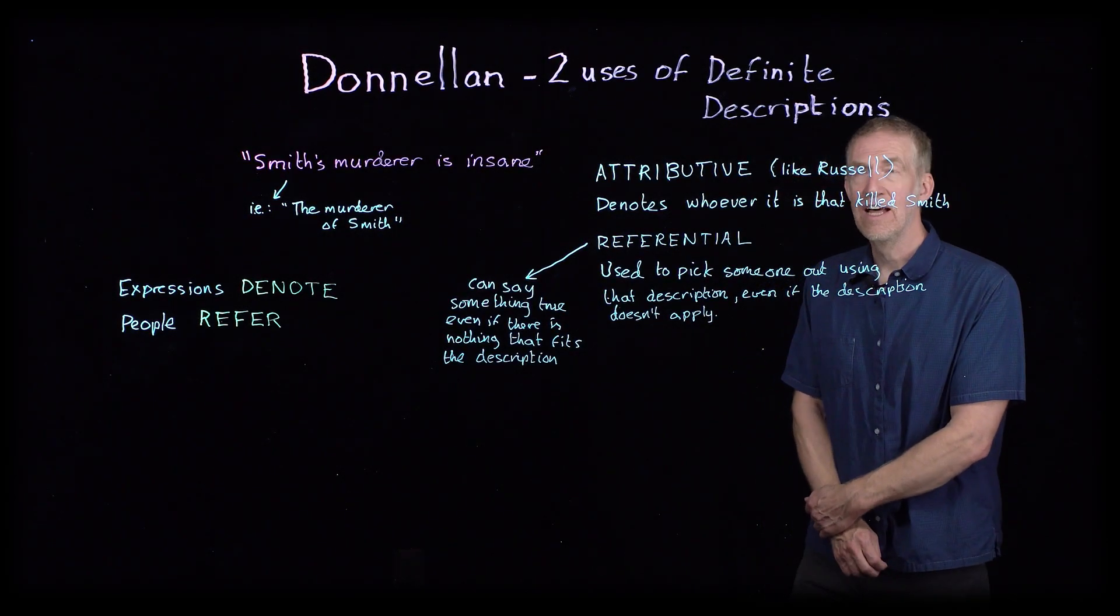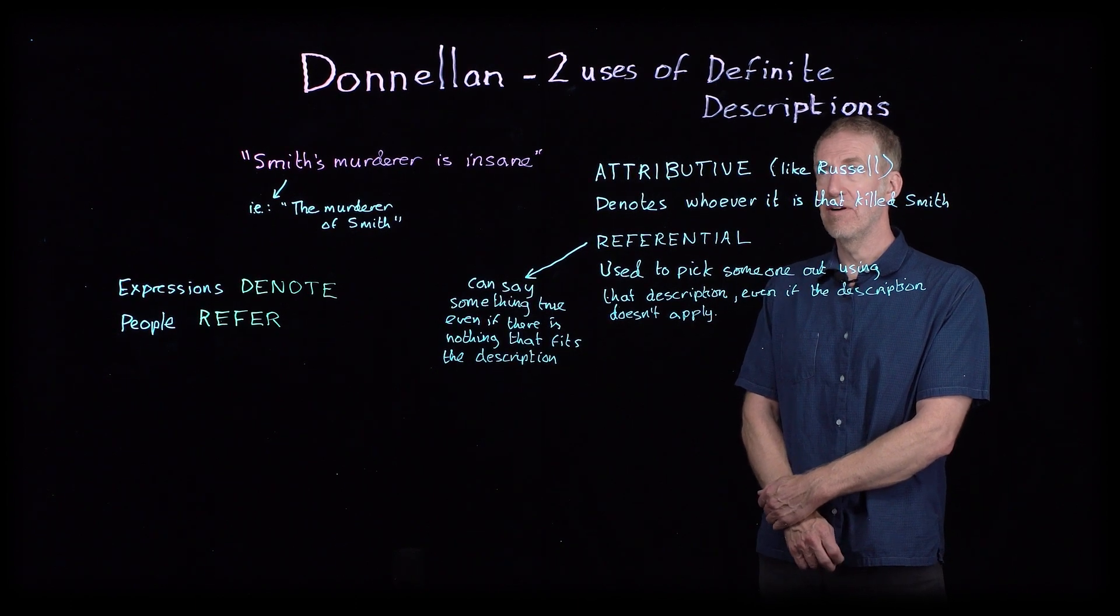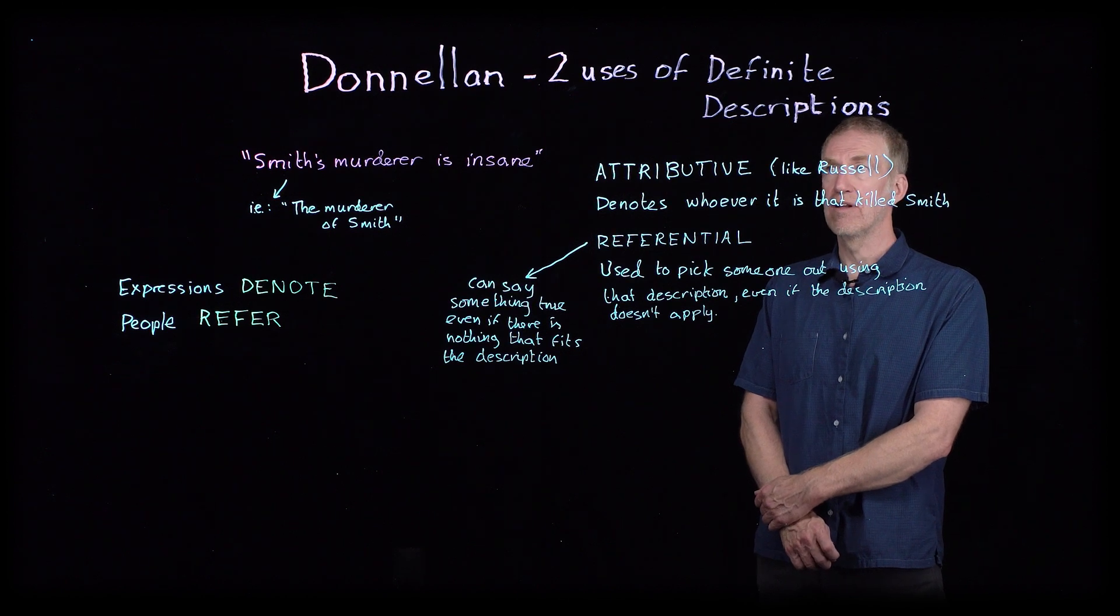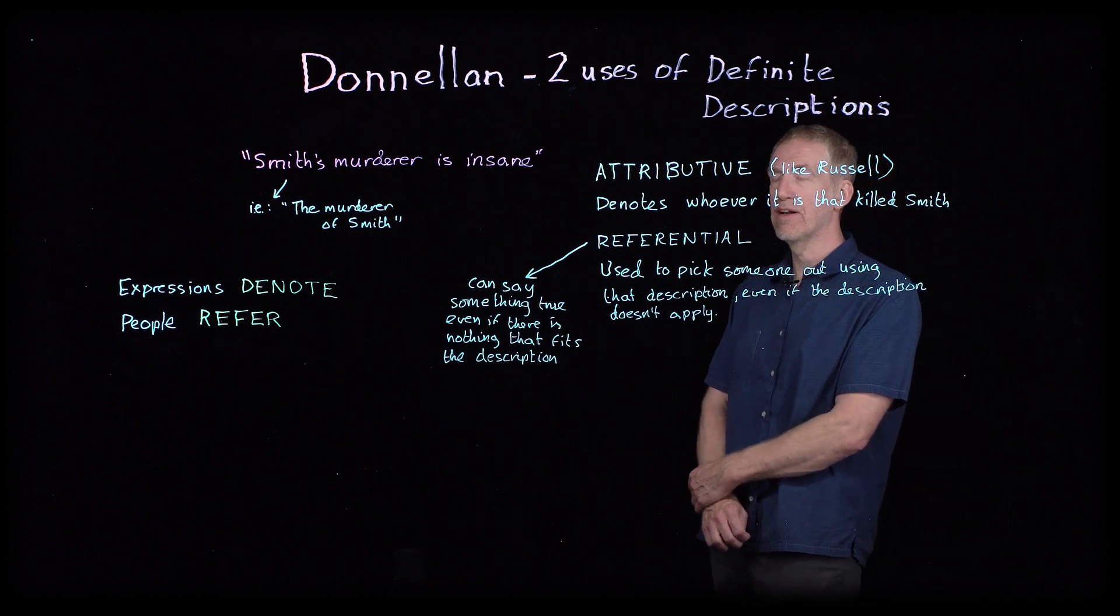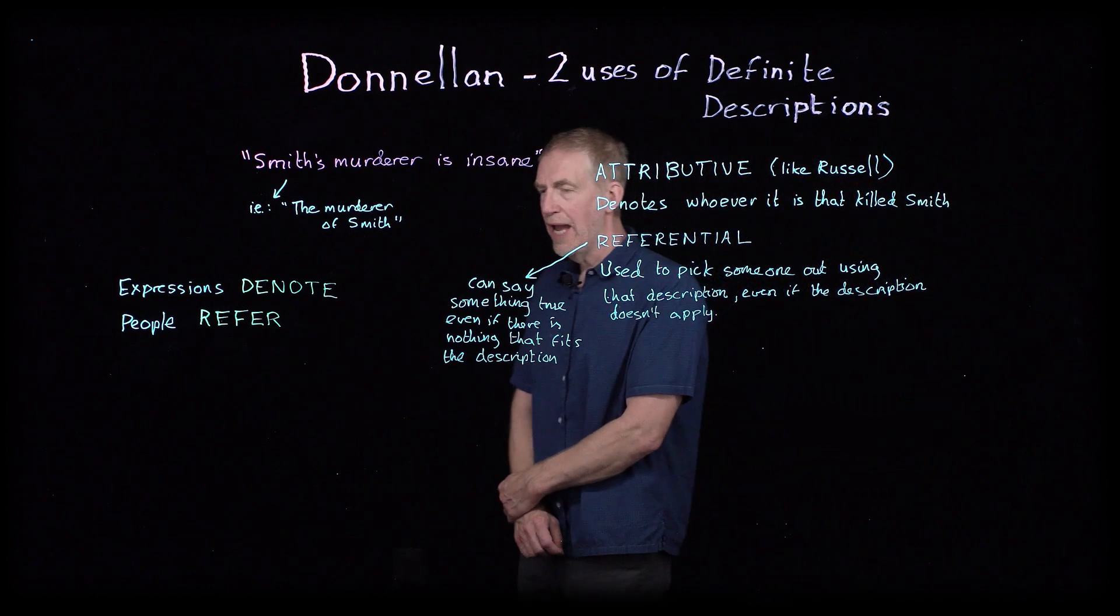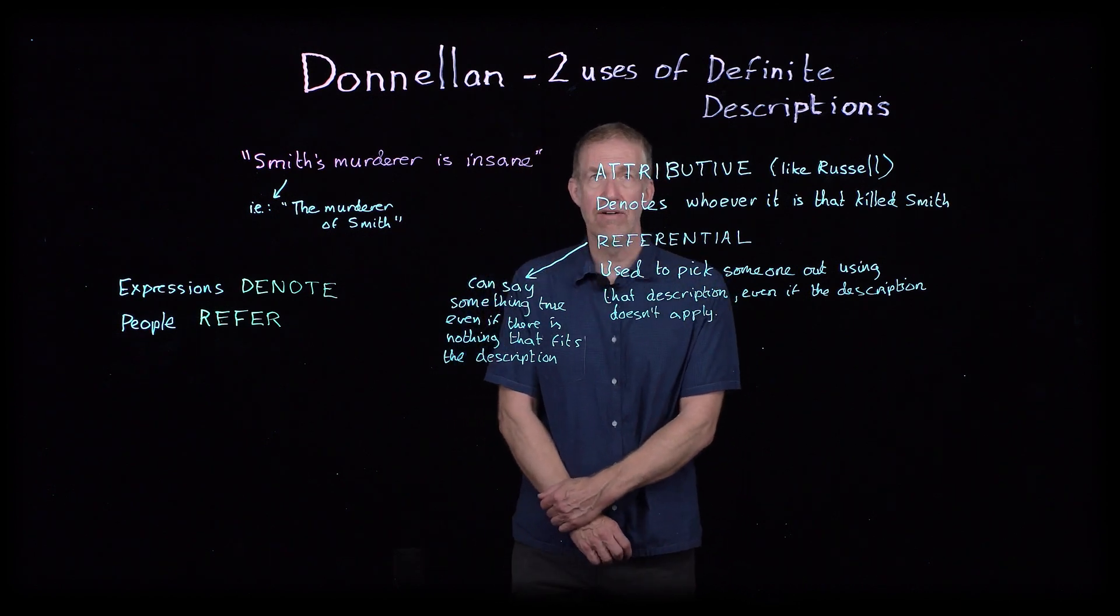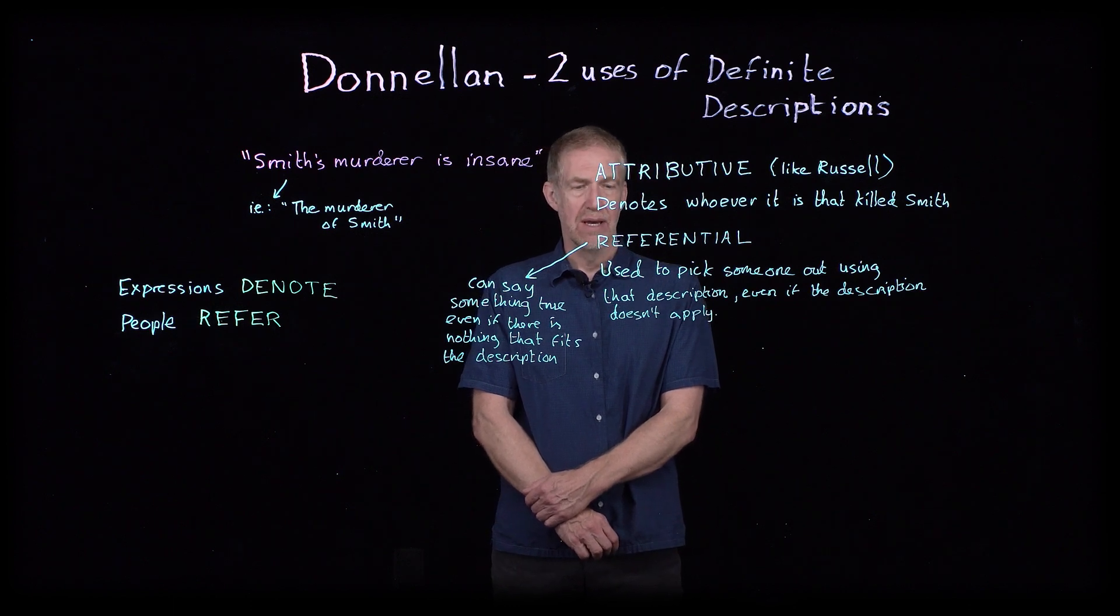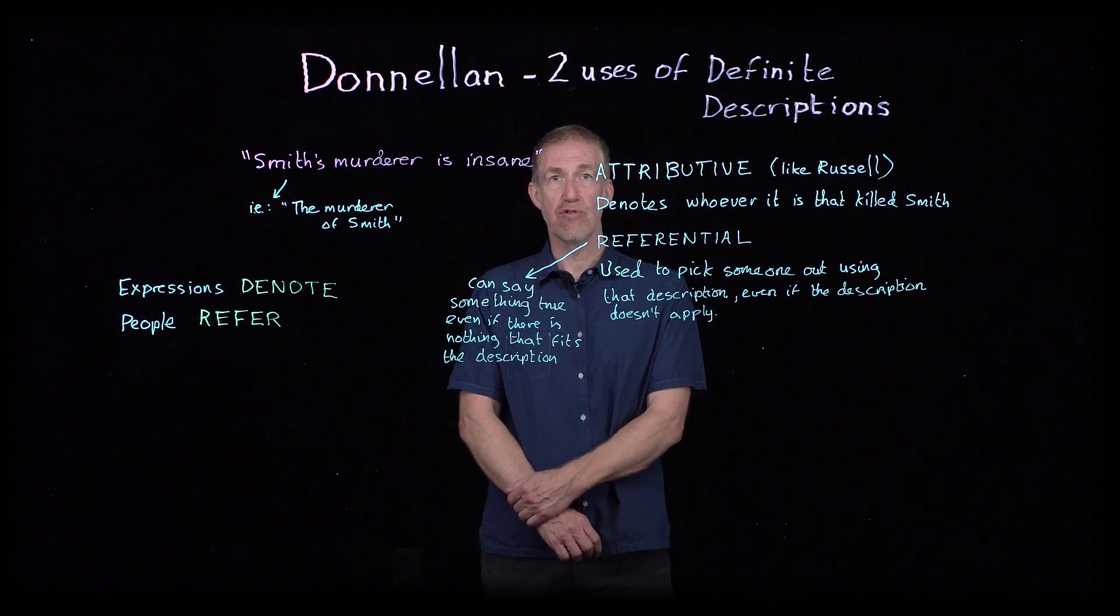Now we're going to look at another classic article in philosophy, although this one considerably later than the Russell article. This one was published, I believe, in the 1960s by a guy called Keith Donnellan, and it discusses the theories both of Russell, who we've just looked at, but also of P.F. Strawson.